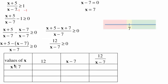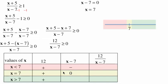The values of x: when x is less than 7 (colored pink), when x equals 7 (colored yellow), and when x is greater than 7 (colored green). The value of 12 is always positive in all three regions. For x minus 7: when x is less than 7, it's negative — pick anything less than 7, like negative 8: negative 8 minus 7 is negative 15, so negative. When x equals 7, you get 0. When x is greater than 7, like 8: 8 minus 7 is 1, which is positive. So we have negative, 0, and positive.